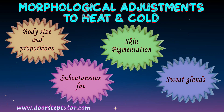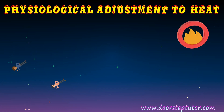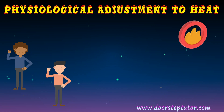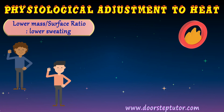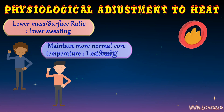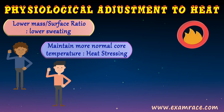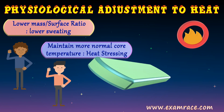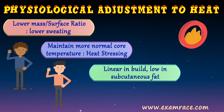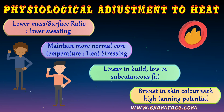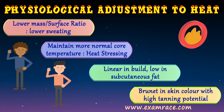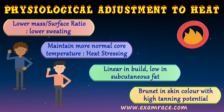Coming to the physiological adjustments to heat: comparing people of African descent to white people, those of African descent had a lower mass-to-surface ratio and showed a lower sweating rate, while also maintaining more normal core temperatures. This increases heat tolerance in people — a quality called heat stressing. These people tend to have a linear build, low subcutaneous fat, and darker skin color with high tanning potential — qualities that help a person survive in extreme heat conditions.